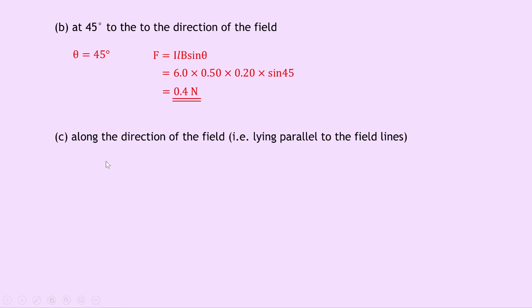And part C says to calculate the size of the force on the wire if it's placed along the direction of the field, i.e. lying parallel to the field lines. So this time we can say that theta equals 0 degrees. So writing down our equation F equals ILB sin theta and substituting in the numbers we get 6 times 0.5 times 0.2 times sin 0 but sin of 0 is 0 so this should come out to 0 newtons.